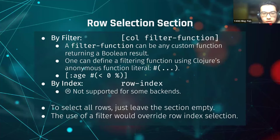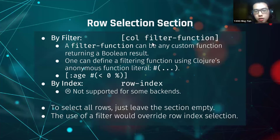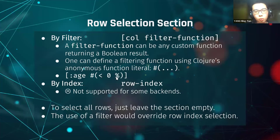Let's look at the row selection section. Currently we support two kinds of row selection. The first is by filter — you specify the column and the filter function to perform on it. The function can be any custom function returning a boolean. You can also define the function using Clojure's anonymous function literal. For example, this selects rows whose field value is greater than zero.